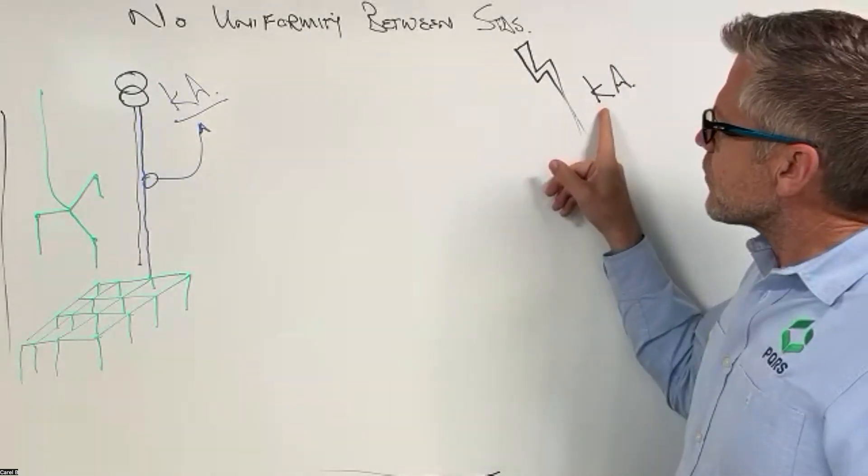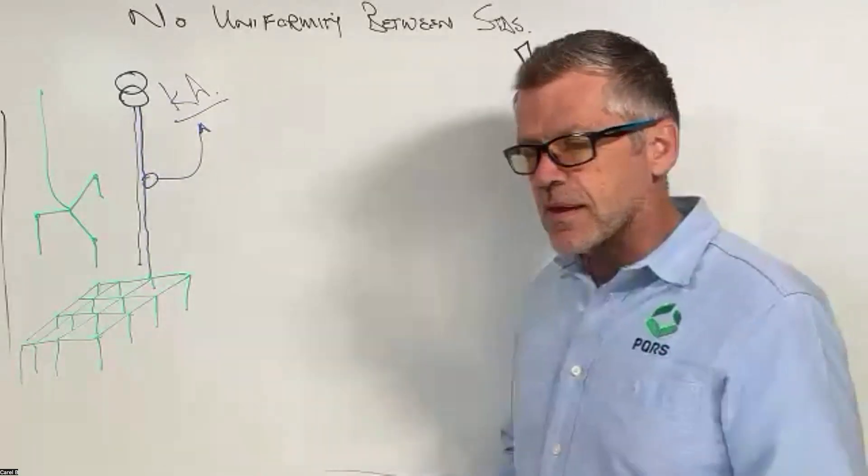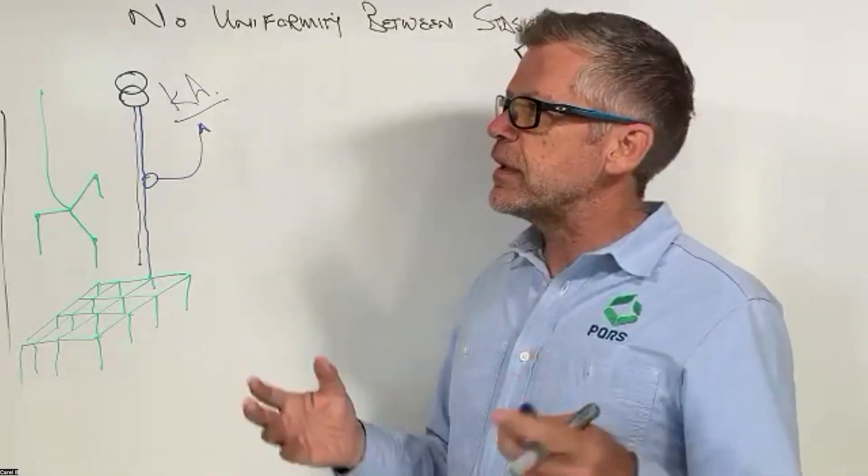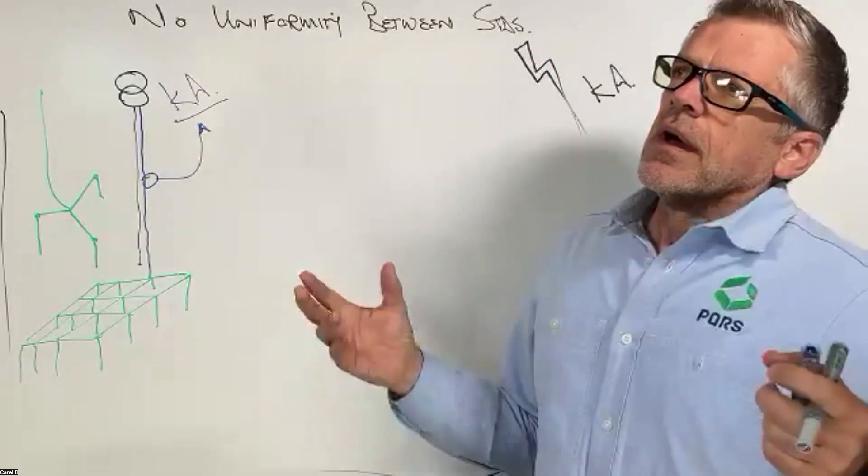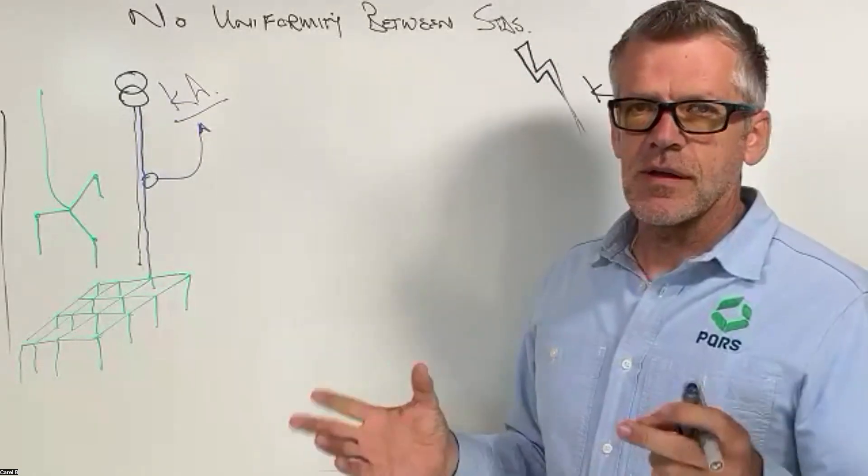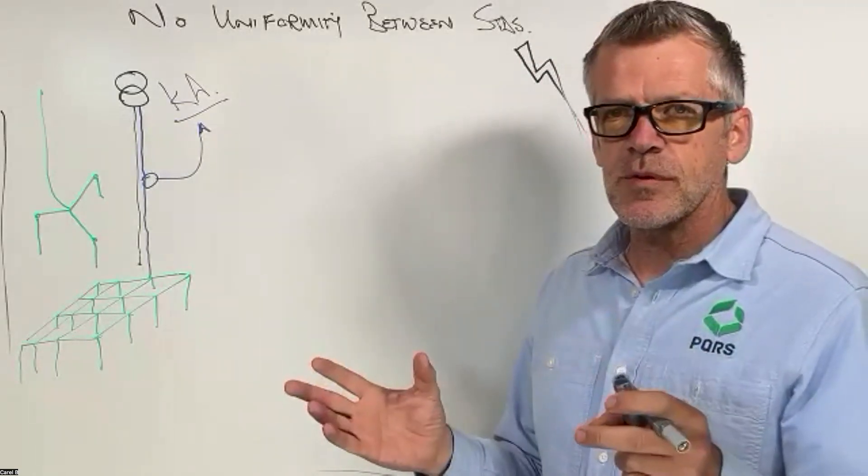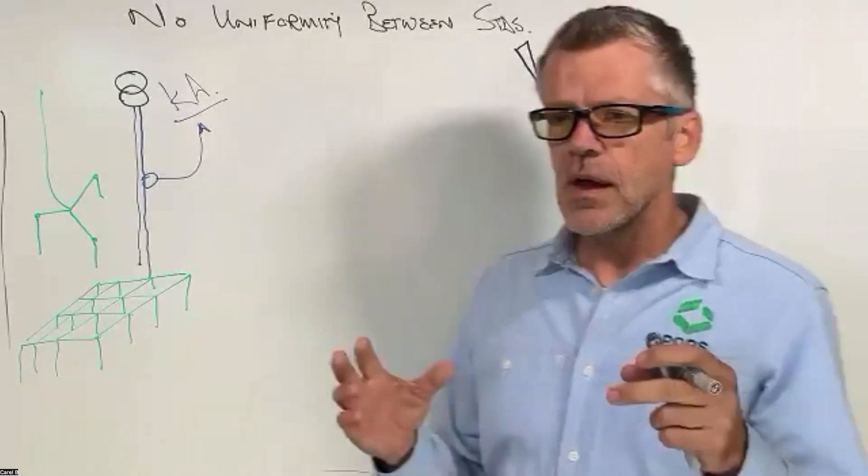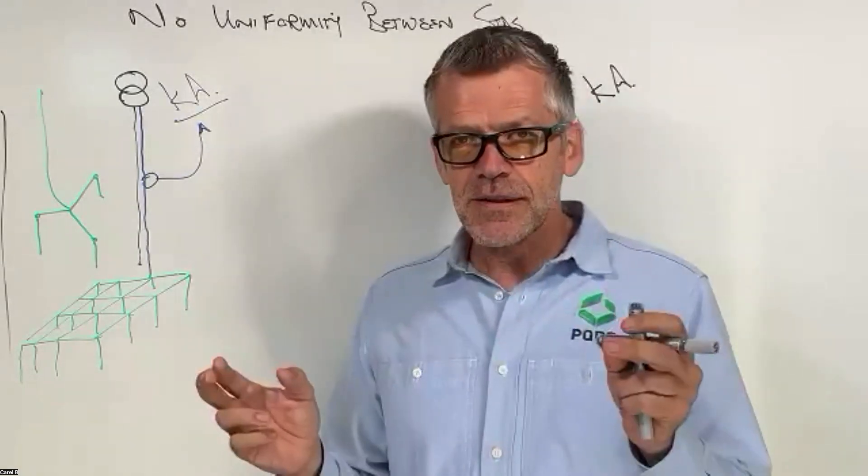So the kA from a lightning strike is the same thing. In South Africa, if you speak to, maybe I shouldn't be mentioning names, so let's just try and keep it neutral, maybe Kenneth would be able to confirm that apparently the strongest lightning strike in South Africa would be in the region of about 16 kA.